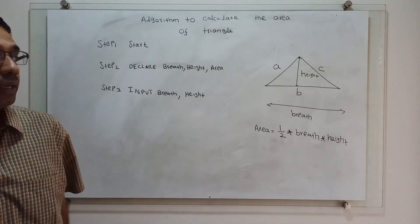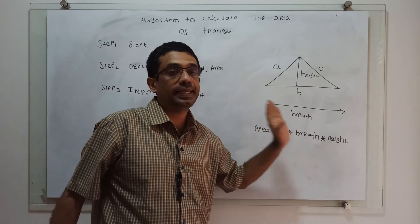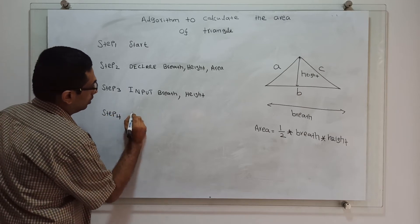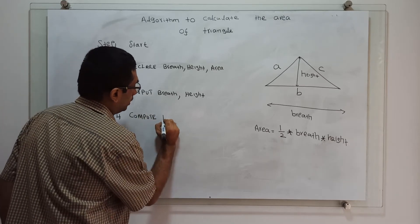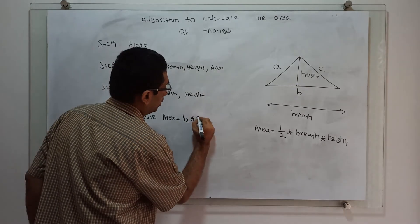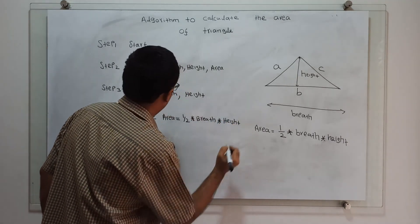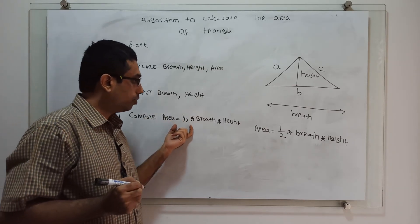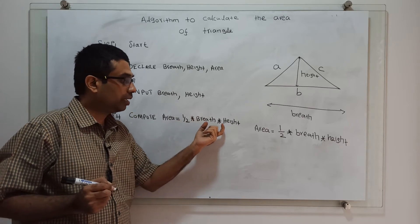Now we have to calculate the formula of area. The formula is half into breadth into height. Step 4: Compute — area equals half into breadth into height. Here, compute is a keyword to perform a calculation, area is the variable, and half into breadth into height is the formula.